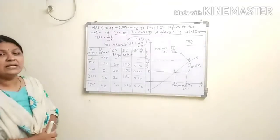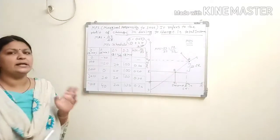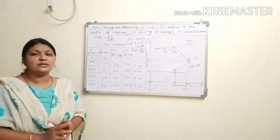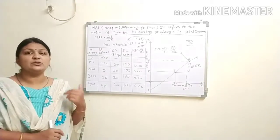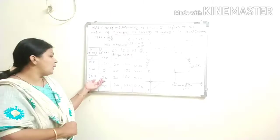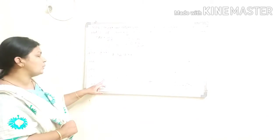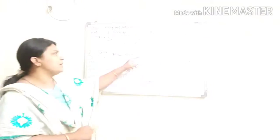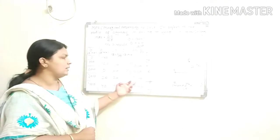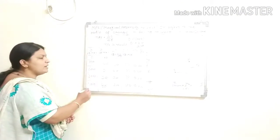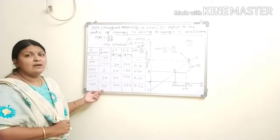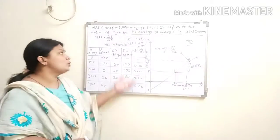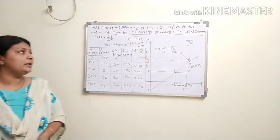Now income increases again by 100 rupees to 300 rupees. Your saving is 20 rupees, meaning your consumption expenditure is 280 rupees. Delta S: 20 minus 0 equals 20. Delta Y: 300 minus 200 equals 100. MPS equals delta S upon delta Y equals 20 upon 100 = 0.20. So as income changes by 100, saving changes by 20 — delta S remains 20 and delta Y remains 100, so MPS consistently stays at 0.20.